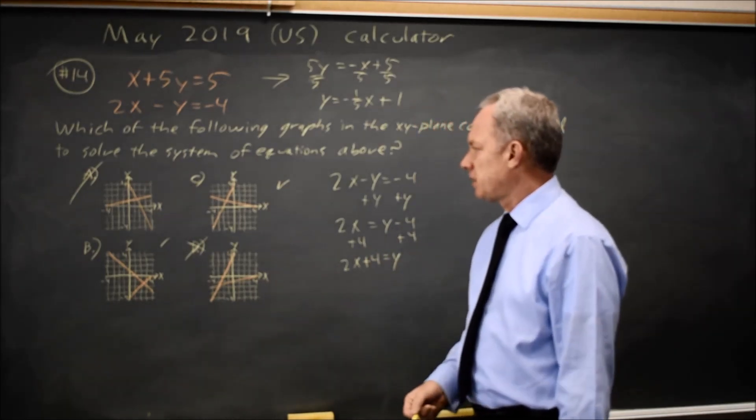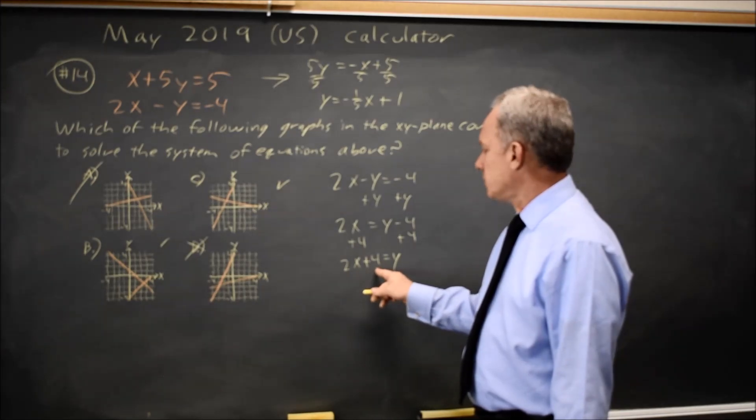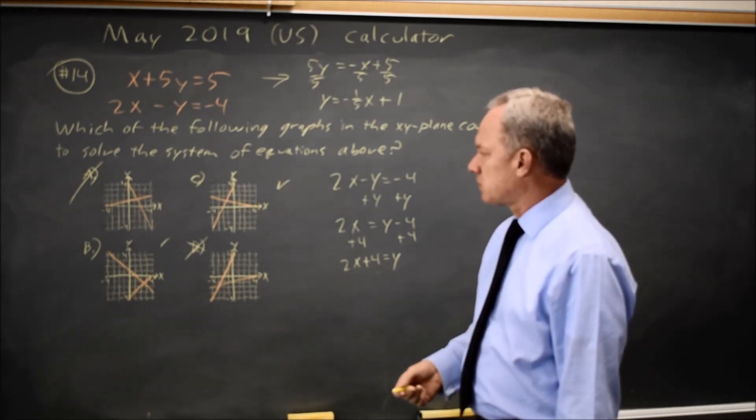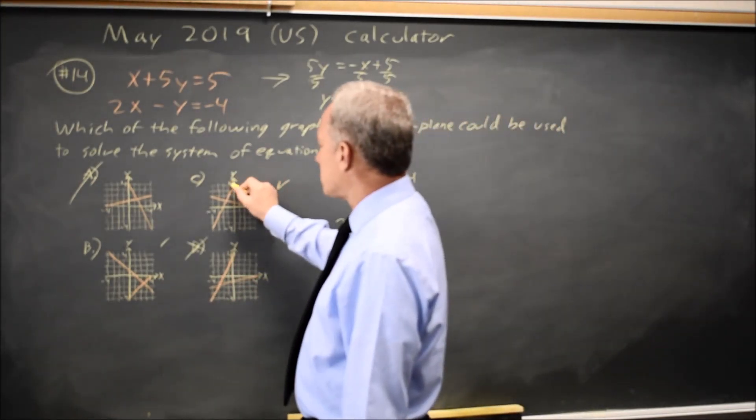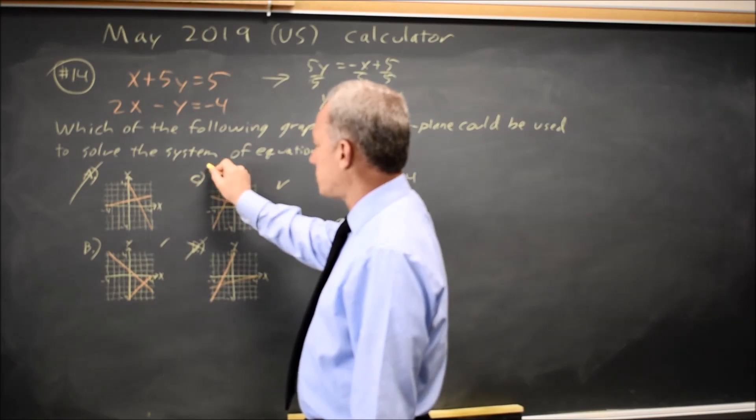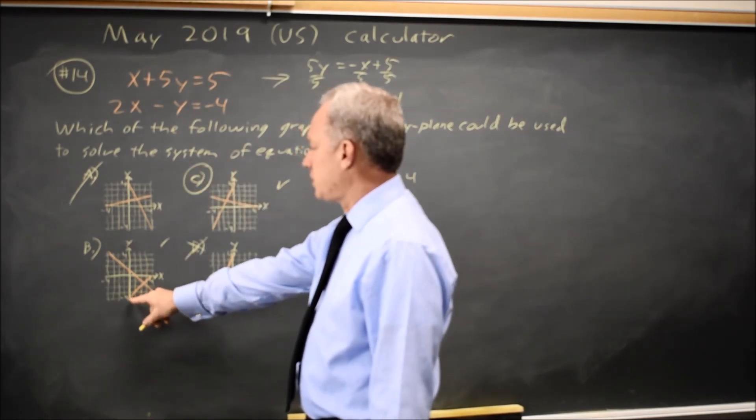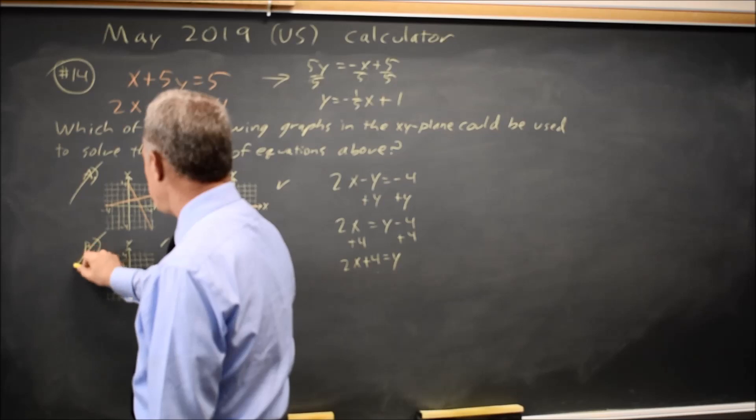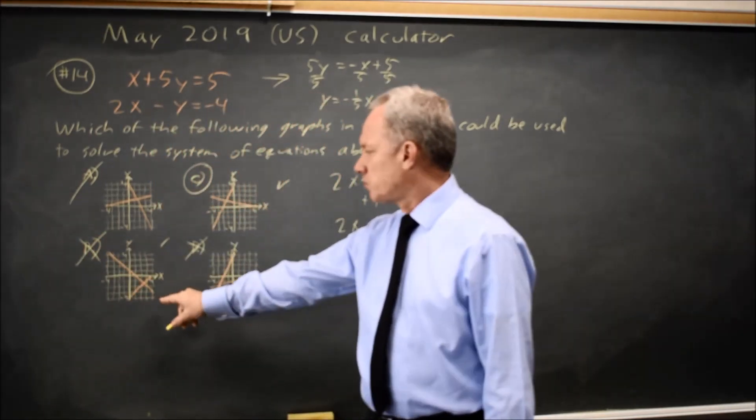Our second equation has a slope of positive 2 and an intercept of positive 4, which looks like the positive slope on choice C. Choice D, the intercept is... I'm sorry, choice B, the intercept is negative 4, so B is not correct.